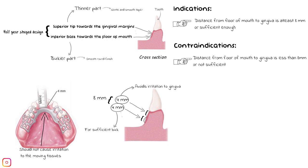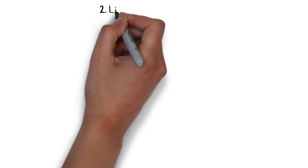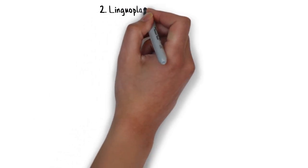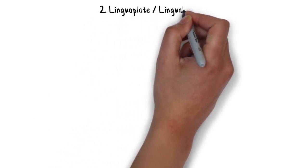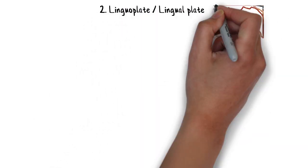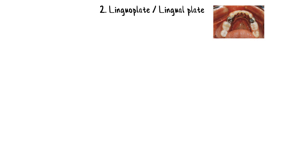Although irritation from the gingiva and lingual frenum can be avoided by providing generous relief, doing so causes food and the tongue to trap. In these cases, the lingual plate is strongly recommended as the major connector of choice.